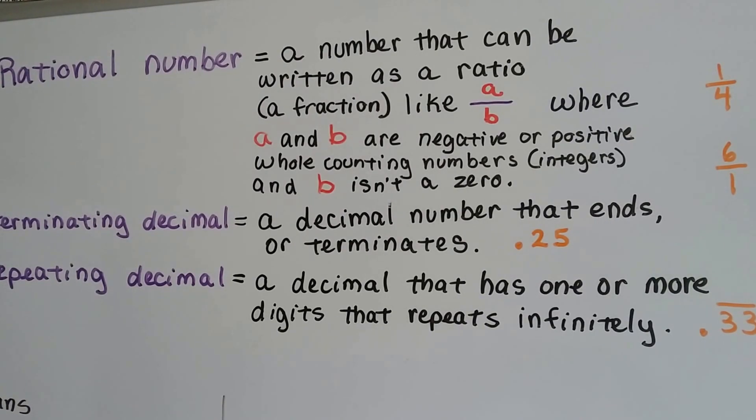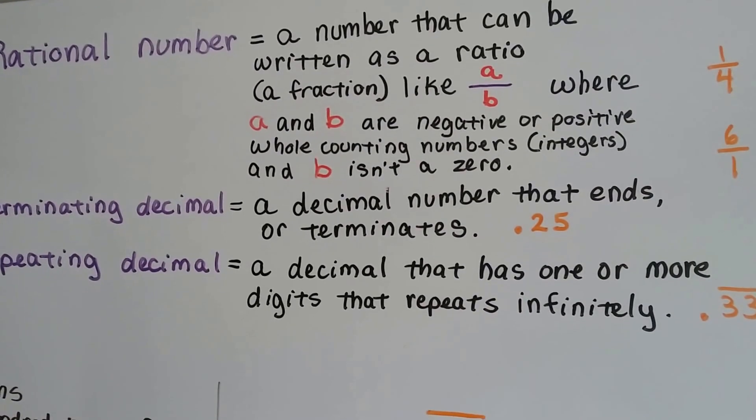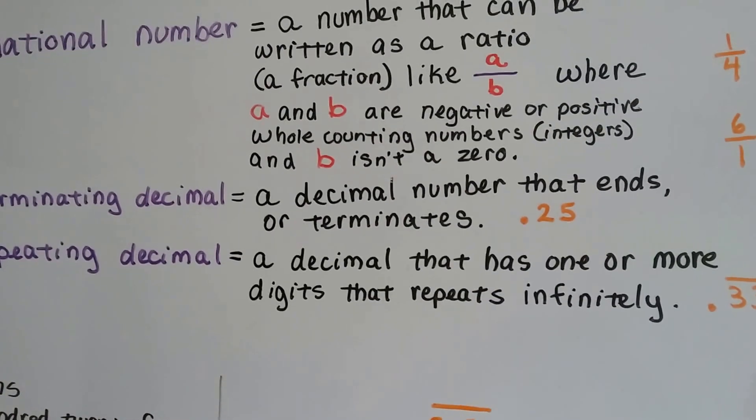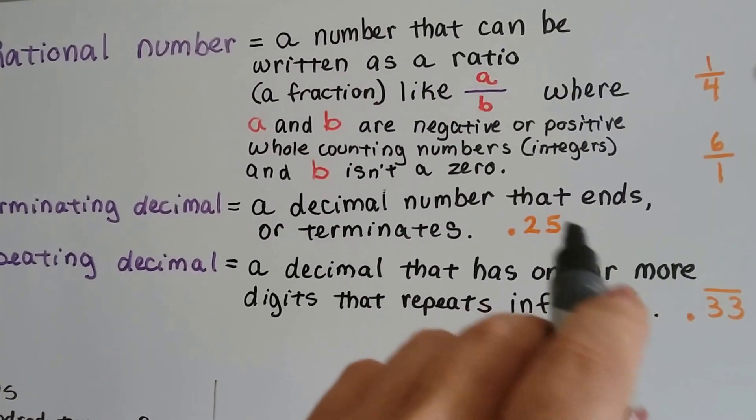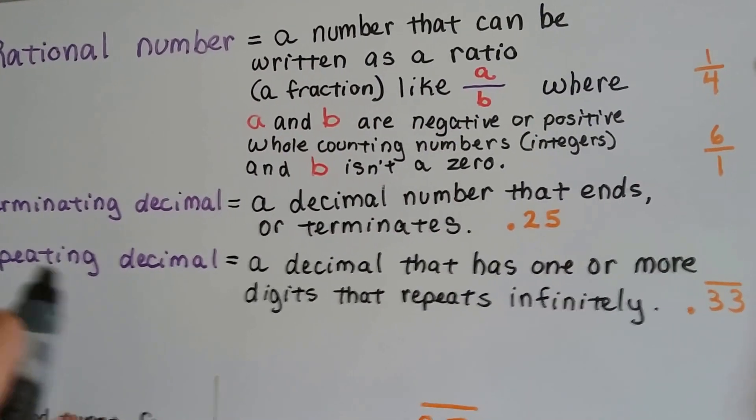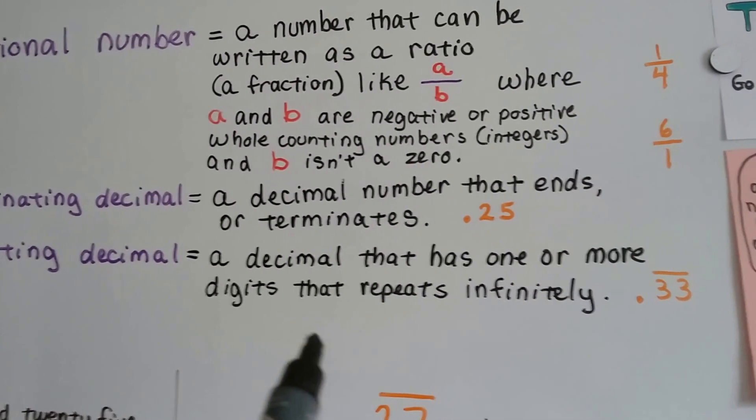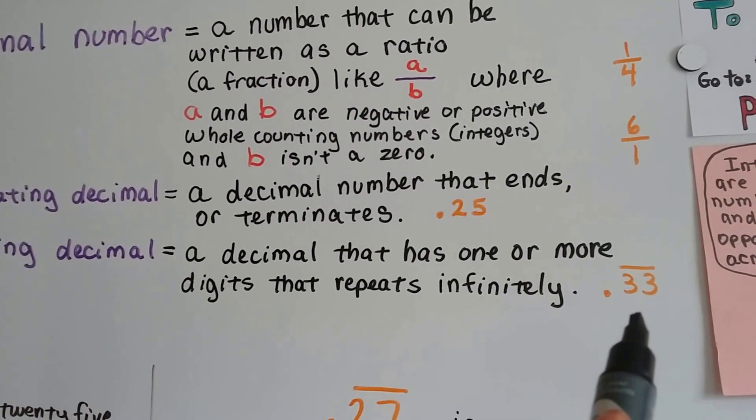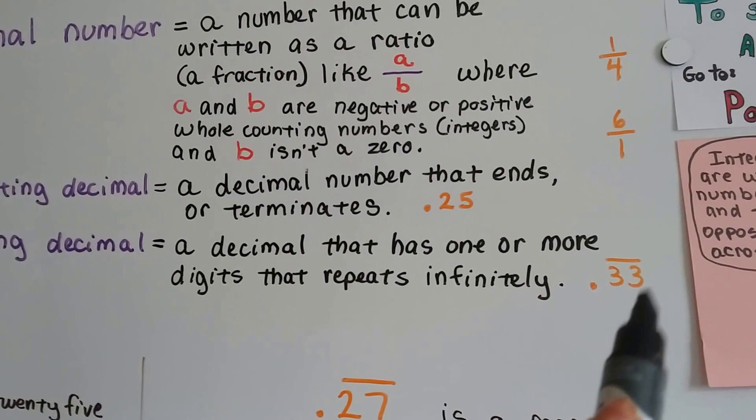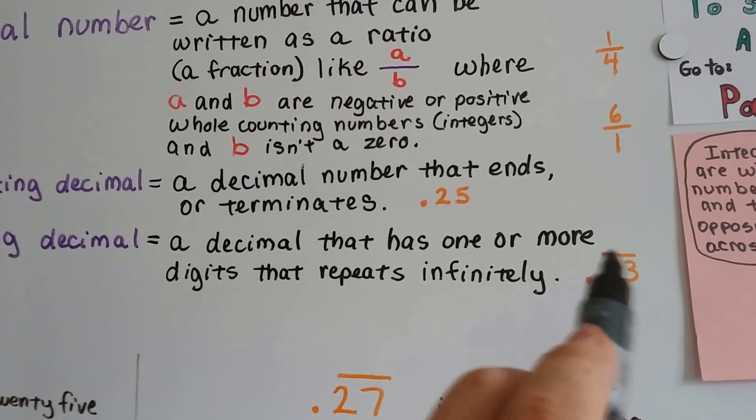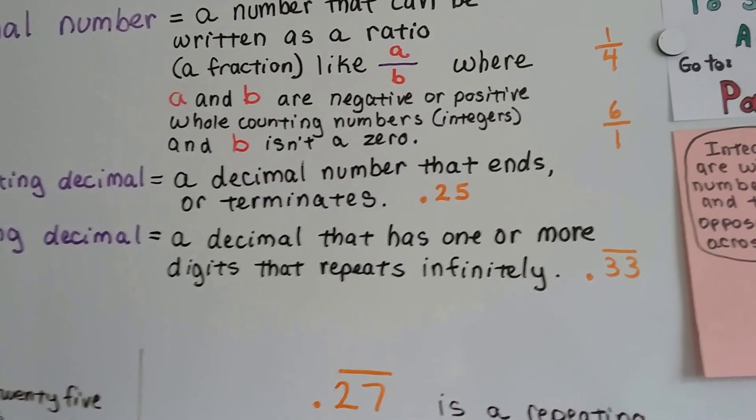A terminating decimal is a decimal number that ends or terminates. 0.25, it ends at the 5. There's no more of a decimal past this. And a repeating decimal is a decimal that has one or more digits that repeats infinitely, like 0.3333333, and the 3 just keeps on going. So we put a bar over the top of it and just write a couple of them.